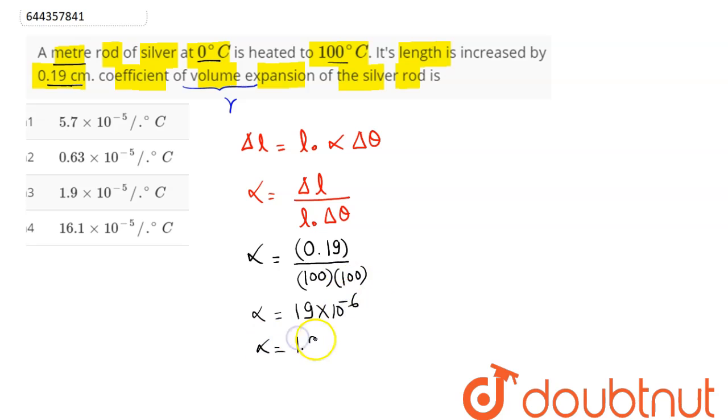is equal to 3α. So gamma equals 3α. Hence, 3 times 1.9 × 10⁻⁵, which equals 5.7 × 10⁻⁵ per °C. Hence, the coefficient of volume expansion of silver rod is 5.7 × 10⁻⁵, which here is option